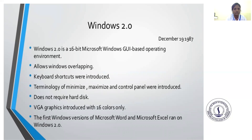Windows 2.0 was introduced on December 19, 1987. It is a 16-bit Microsoft Windows GUI-based operating environment. Features include: allowing overlapping windows; keyboard shortcuts were introduced; terminology of minimize, maximize, and control panel was introduced; VGA graphics introduced with 16 colors only. The first Windows versions of Microsoft Word and Microsoft Excel ran on Windows 2.0.